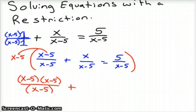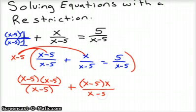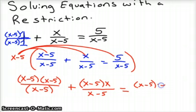Plus, now we'll keep distributing, we've got x minus 5 times x over x minus 5 equals, and we'll keep on distributing, x minus 5 times 5 over x minus 5.